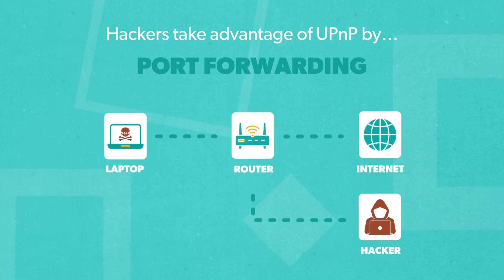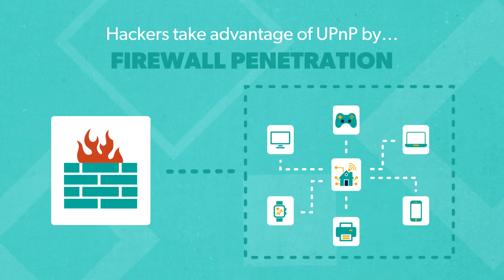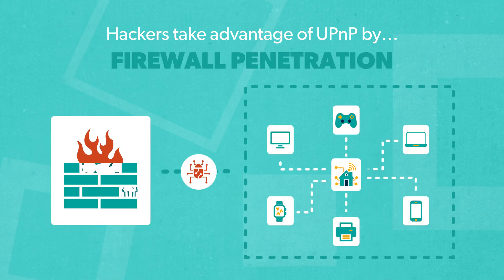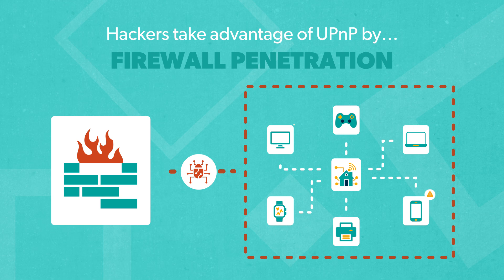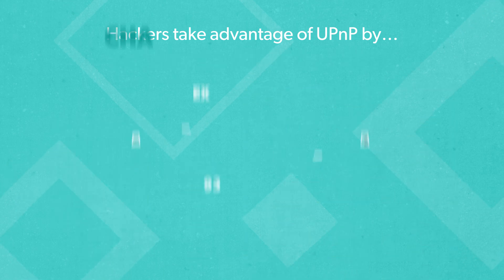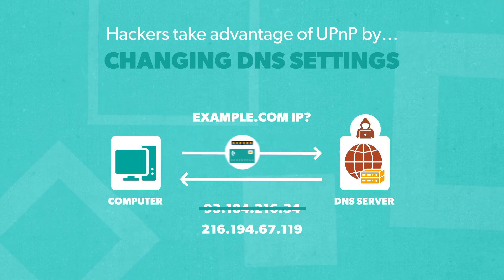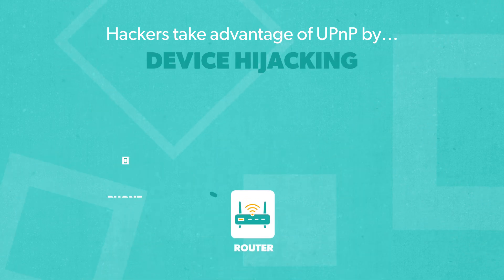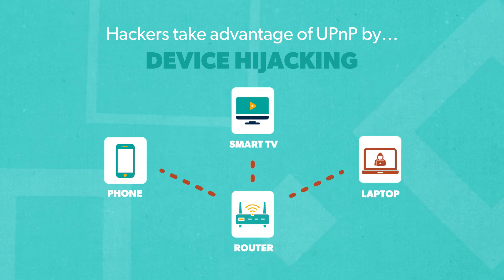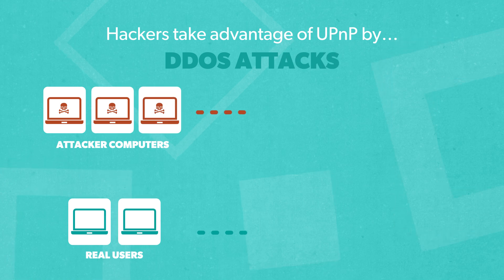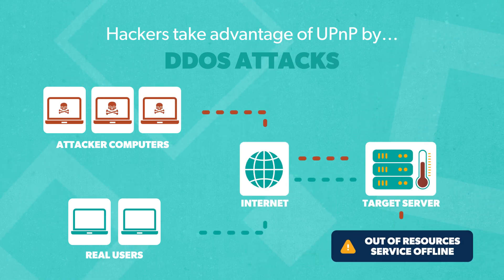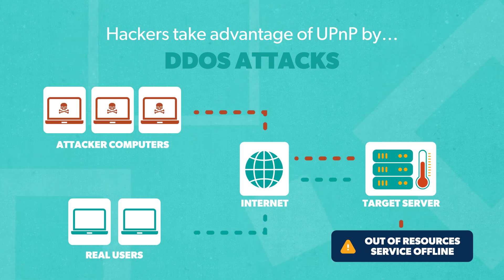Firewall penetration: malware can poke holes in your firewall, exposing vulnerable devices. Changing DNS settings redirects all your web traffic to malicious servers where hackers can record sensitive data. Device hijacking is when smart devices are taken over and used to send malicious instructions to other devices on the network. And DDoS attacks use UPnP devices to amplify signals, overwhelming servers with massive levels of traffic.